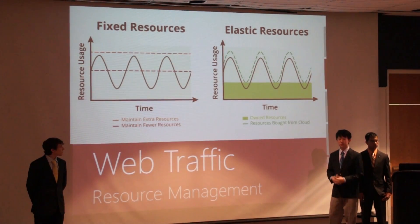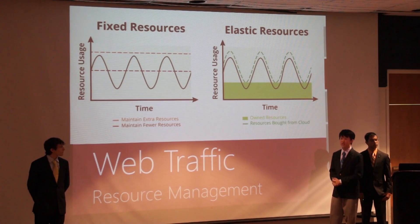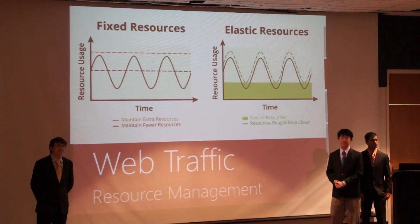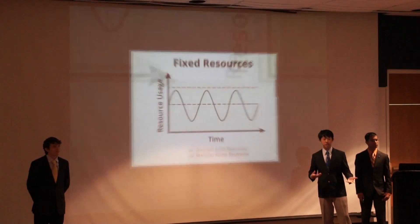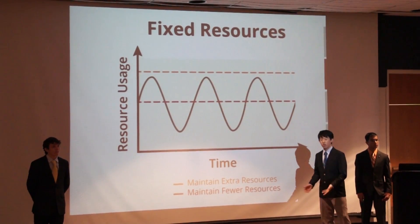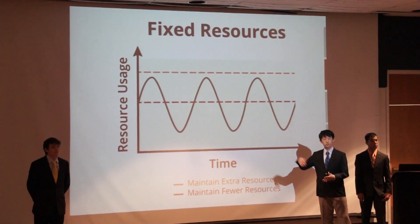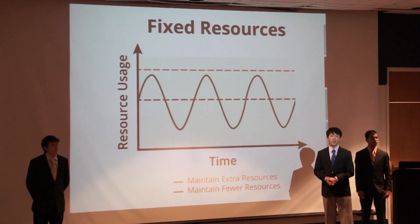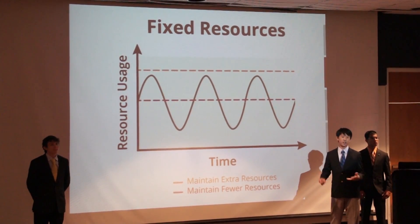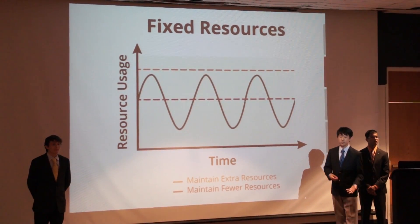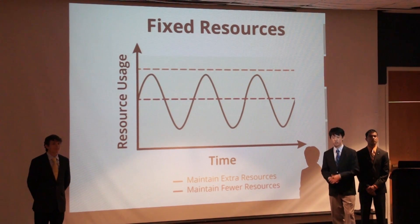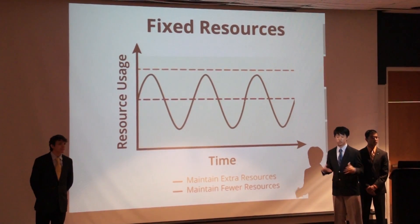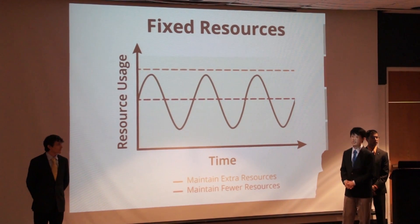One practical example of the efficiency of the cloud would be in web traffic resource management. Say you own an e-commerce store or an online web store — you'll often see a lot of user fluctuations. For example, during the winter months, you might see more users because people are buying gifts for the holiday season. In order to meet this fluctuation, you have to either overbuy or underbuy because you are only using a fixed amount of resources.